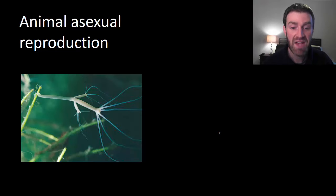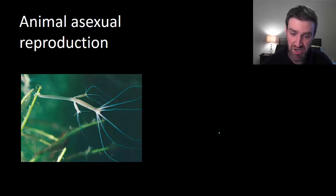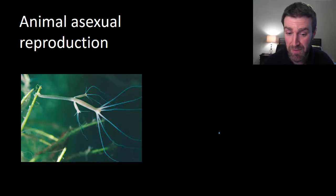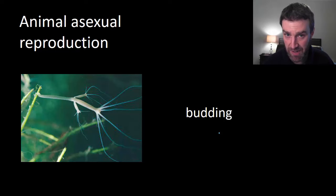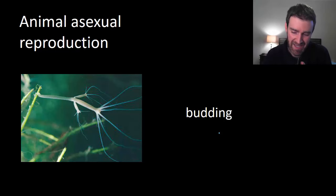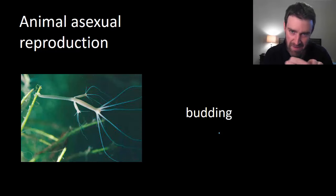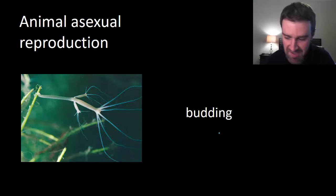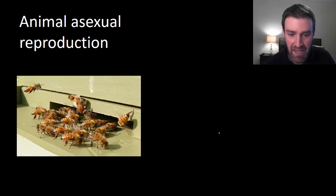Let's finish with some quick example animals just to show that some animal species can asexually reproduce as well. One example is a hydra doing budding. Budding typically involves making a clone of yourself that starts smaller, until it pops off and eventually grows to adult size. Here's a hydra reproducing by budding.